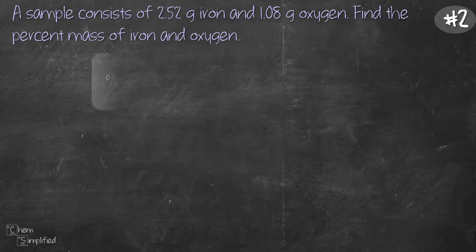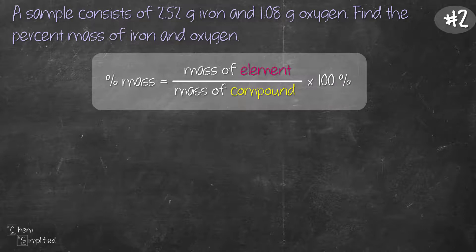So that means using the same formula we need to figure out the mass of the compound which we can get by easily adding the mass of iron and oxygen which gives us 3.60 grams. That's the mass of the compound containing iron and oxygen.